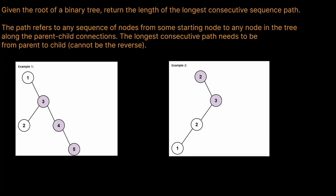Welcome back to the Cracking Fang YouTube channel. Today we're going to be doing a quick video on LeetCode problem 298, binary tree longest consecutive sequence. Given the root of a binary tree, return the length of the longest consecutive sequence path. The path refers to any sequence of nodes from some starting node to any node in the tree along the parent-child connections. The longest consecutive path needs to be from parent to child and cannot be the reverse.